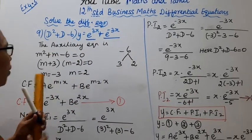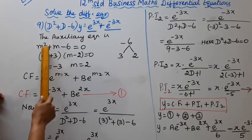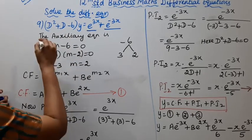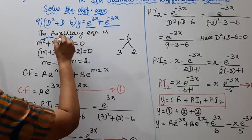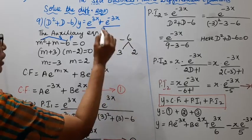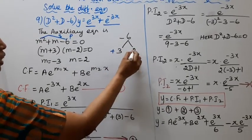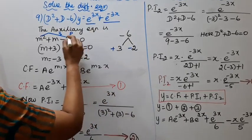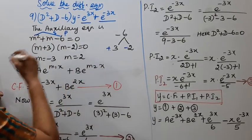The auxiliary equation is m² + m - 6 = 0. The product is −6 and the sum is 1. We need two numbers: +3 and −2, since 3 × (−2) = −6 and 3 + (−2) = +1.